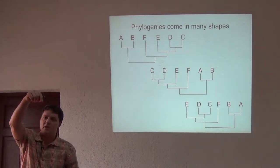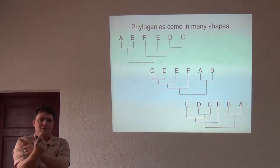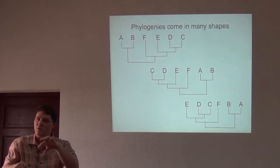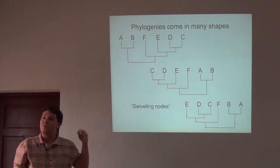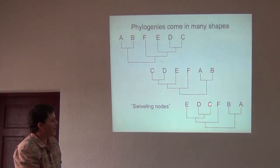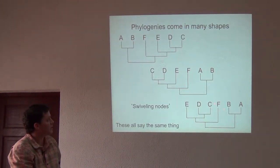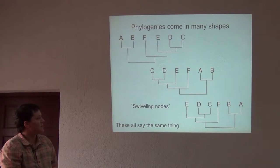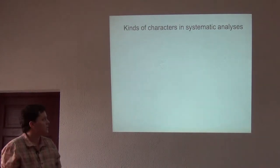It's like one of those mobiles you hang above your child's crib — branches that move around and turn. This phenomenon we refer to as swiveling nodes. You want to know that the nodes on a phylogenetic tree can swivel and they mean the same thing. Just because C and F are close to each other here doesn't change the fact that C is actually most closely related to D. If you start at the tips and work your way back, you're always going to come to the same conclusion.